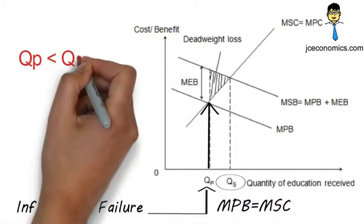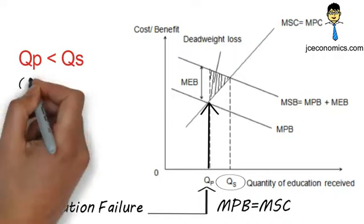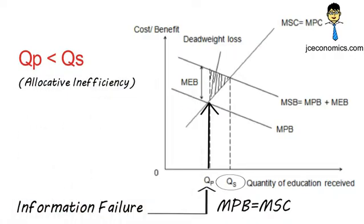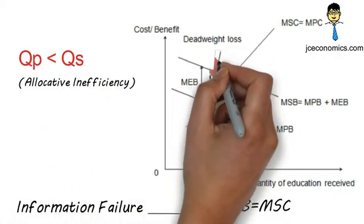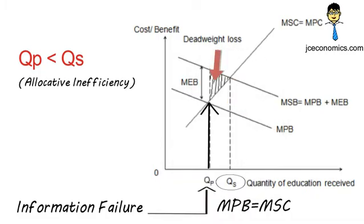Since QP is less than QS, there is under-consumption of education and allocative inefficiency results. Deadweight loss to society is equal to the shaded area as shown.